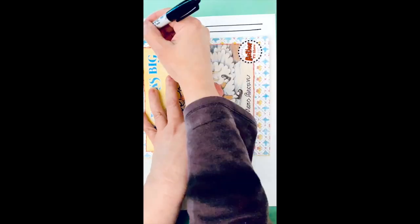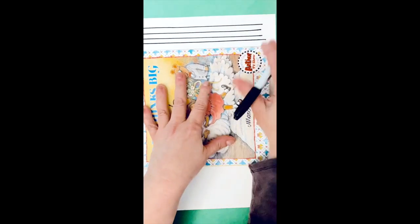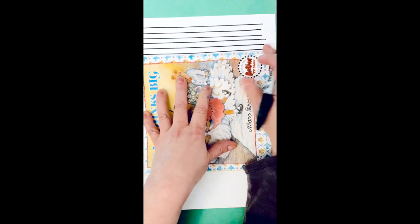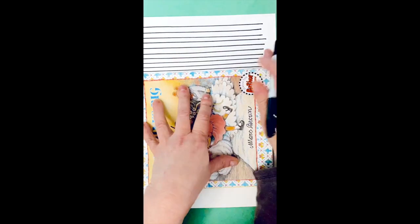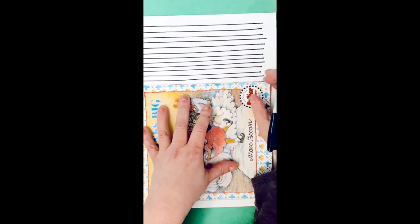All right y'all, this is a crazy easy project to do. You can use lined paper and trace over the lines, or you can have white paper. A ruler's best, I couldn't find my ruler so I used a book as a straight edge.